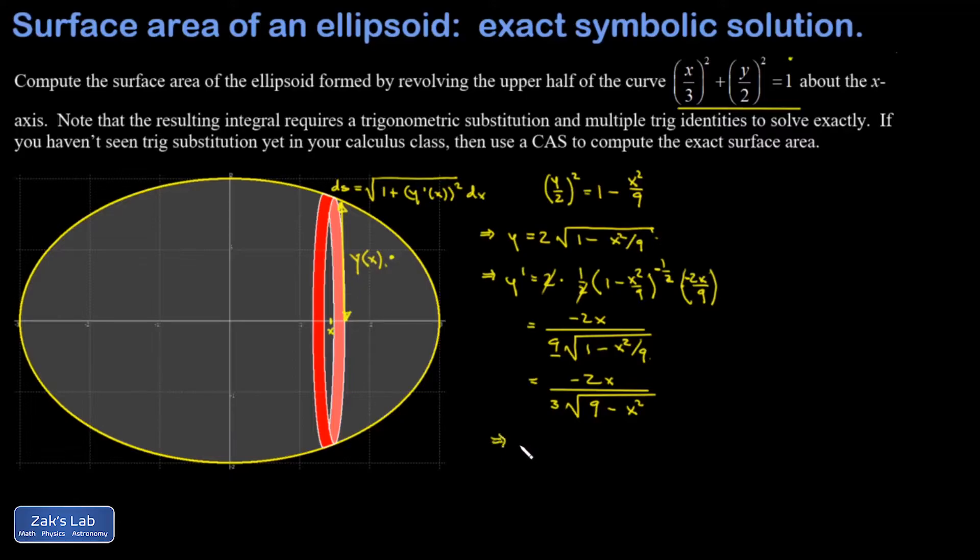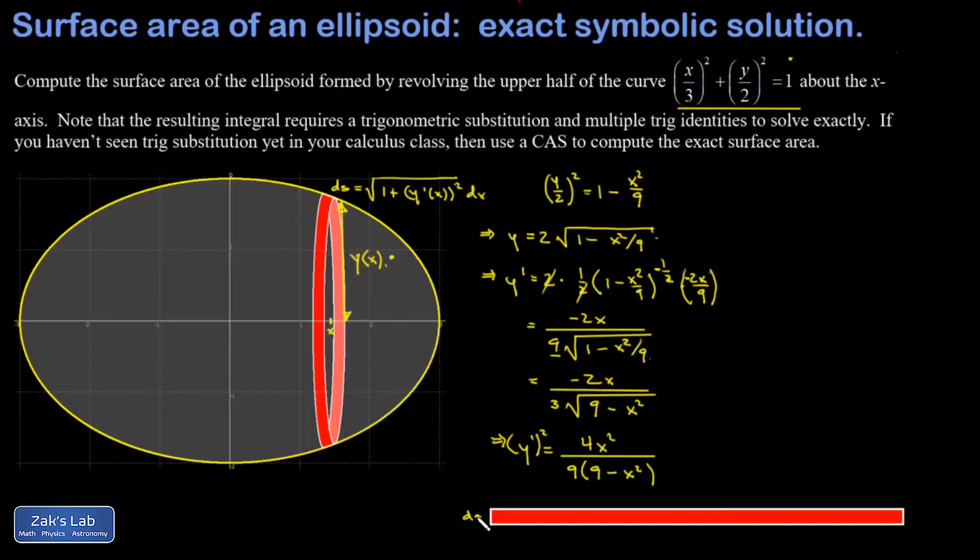Let me get y prime squared before I plug it in to ds. I get 4x squared over 9 times the quantity 9 minus x squared. Now I can write down the area of this thin area contribution from the ribbon. I have a little ds for the thickness, and then the length of this ribbon is the circumference from back when it was rolled up, which is 2 pi times the radius. But the radius is y as a function of x. So dA equals 2 pi y of x times ds.